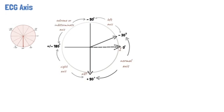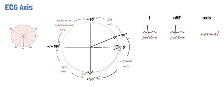Combining this with the deflections in leads 1 and AVF can be used to determine the ECG axis. If the deflections are positive in both leads 1 and AVF, it is a normal axis. If the deflection in lead 1 is positive while the deflection in AVF is negative, there is a possible left axis deviation.